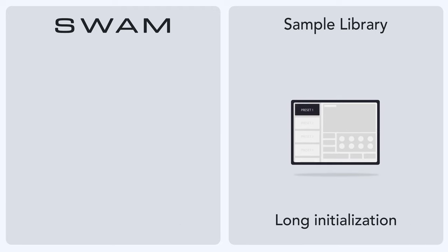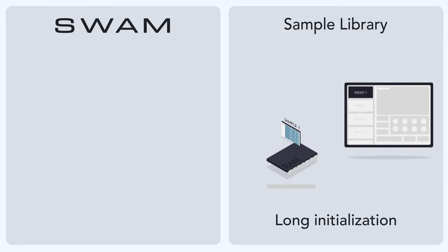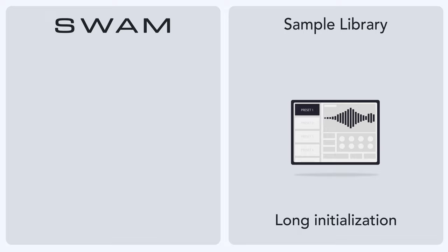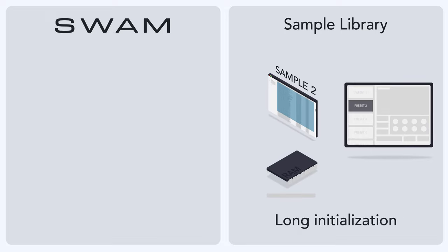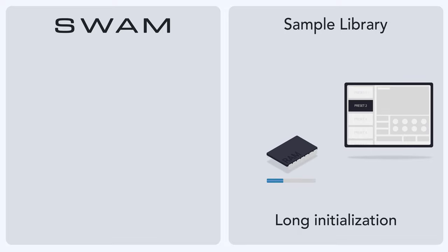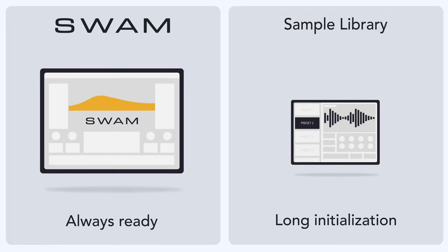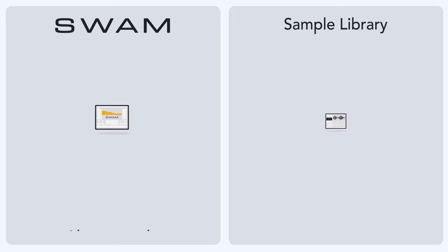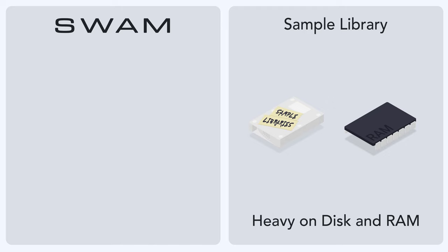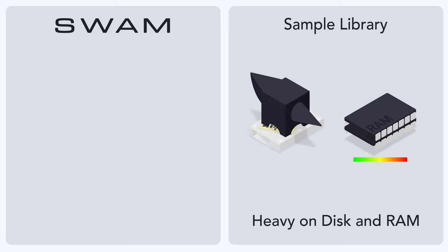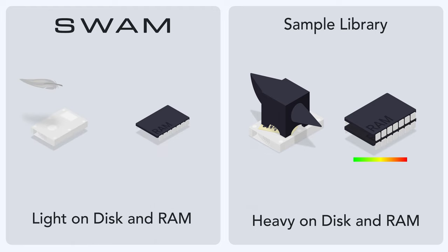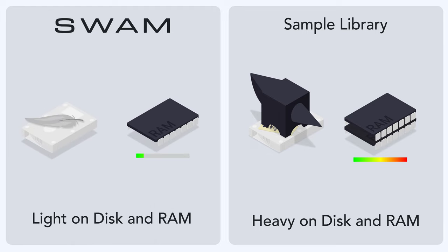Long load times are a problem again when you select a preset for a sample instrument, because initializing the preset requires loading all of its samples for the different articulations at various dynamic levels into RAM. SWAM does not require any preloading to put all of an instrument's articulations at your fingertips right away. Preloading all those samples demands a huge amount of RAM as well as disk storage, but SWAM's RAM and hard disk footprints are only a fraction of the size.